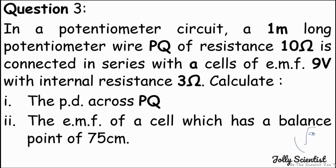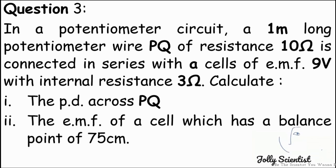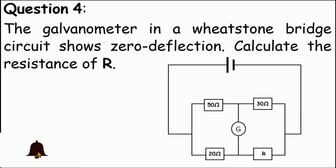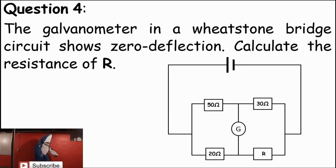Question 3: A one-meter long potentiometer wire PQ of resistance 10Ω is connected in series with a cell of EMF 9V and internal resistance 3Ω. Calculate (a) the potential difference across PQ and (b) the EMF of a cell which has a balance point at 75 cm. Question 4: The galvanometer in a Wheatstone bridge circuit shows zero deflection — calculate the resistance R from the diagram.